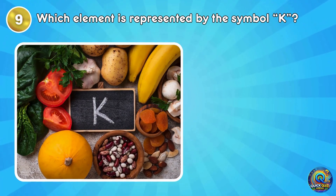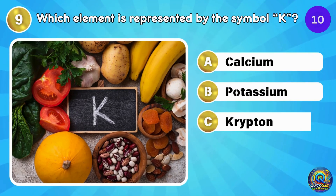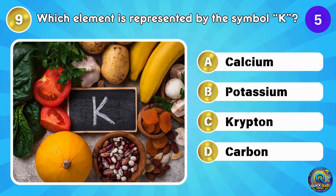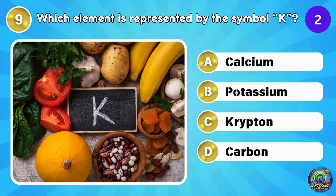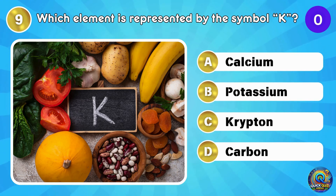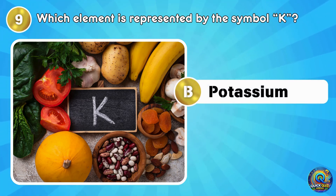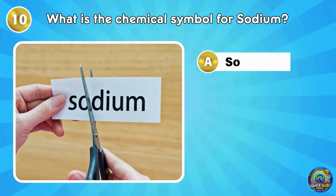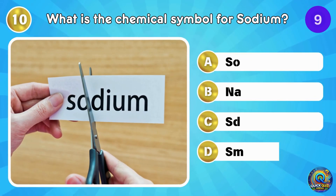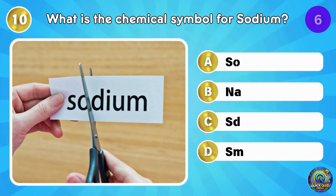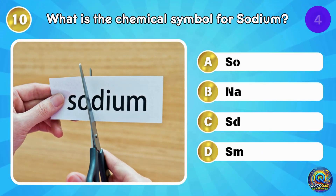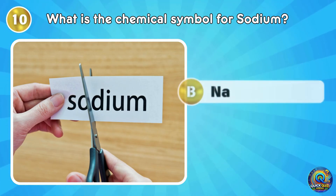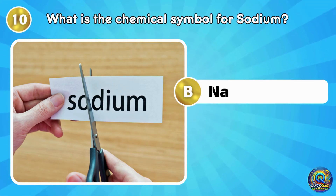Which element is represented by the symbol K? The answer is potassium — your bananas will thank you for knowing this. What is the chemical symbol for sodium? The answer is Na.